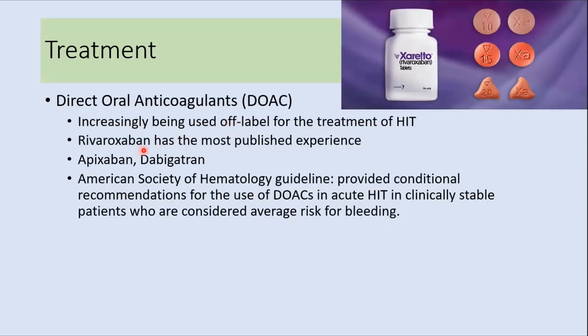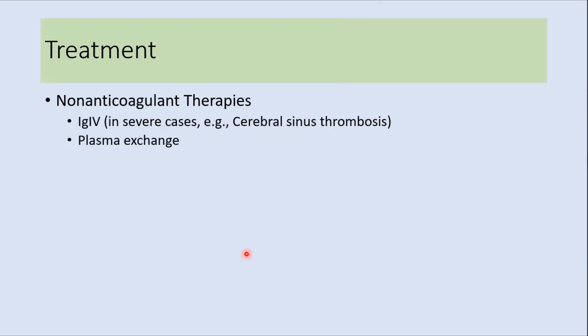Direct oral anticoagulants (DOACs) are being used off-label for HIT treatment, though evidence is limited. Rivaroxaban has the most published experience, and studies on apixaban and dabigatran are ongoing. The American Society of Hematology guidelines provide a conditional recommendation for DOAC use in acute HIT in clinically stable patients considered at average risk for bleeding. Non-anticoagulant therapies such as IVIG and plasma exchange can be used in life-threatening or severe cases, but are not the preferred mode of treatment.